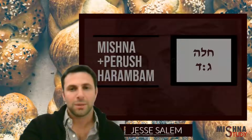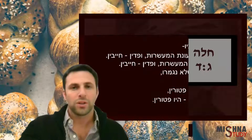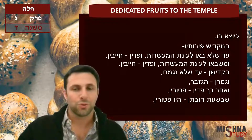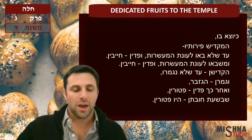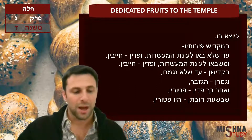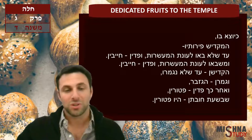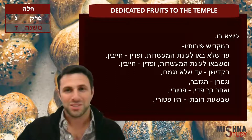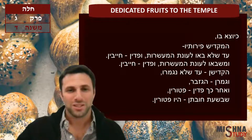Welcome to Mishnah Study, Masechet Hala, Perek Gimmel, Mishnah Dalet. In this Mishnah we're going to speak about dedicating fruits to the temple — to the Hekdesh. This is a Mishnah that we actually had in the fourth perek of Masechet Pe'ah already, Mishnah Chet. If you want to see how I explained it there, you could just refer to that one — it's the same exact Mishnah.